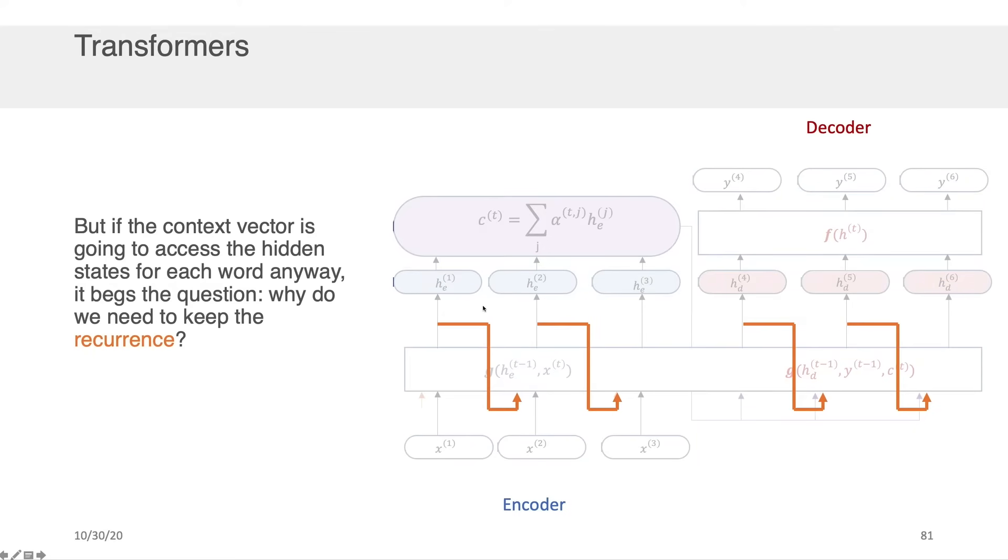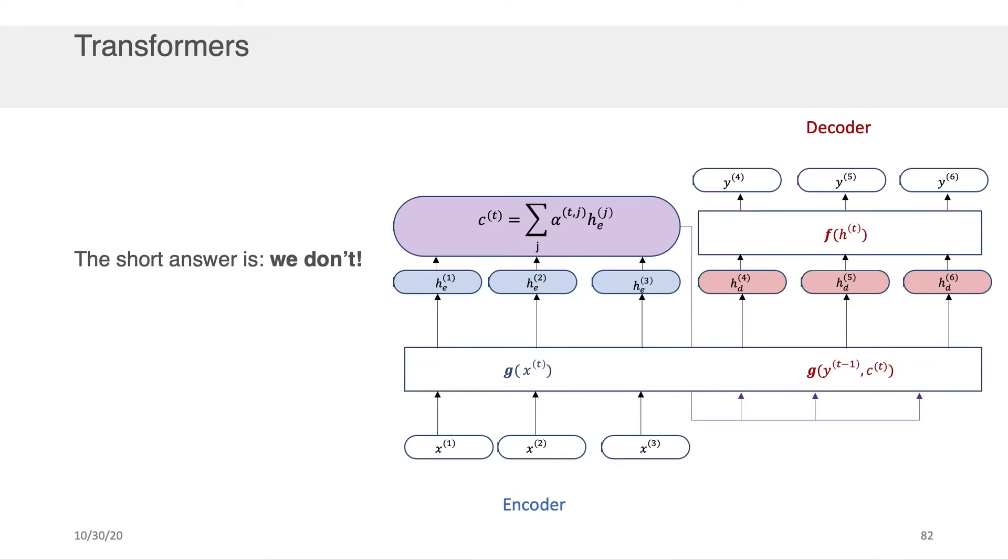Okay well here's the thing: that context is already telling me what to pay attention to on the encoder side. And if it's doing that, it begs the question why do we need to keep the recurrence then? Remember, the reason we were using the recurrence was so that we could pass along this context from the encoder to the decoder. But we've bypassed that now by using this attention mechanism. And the short answer is we don't need the recurrence. Attention is actually all we need in order to solve this problem.